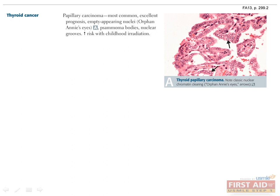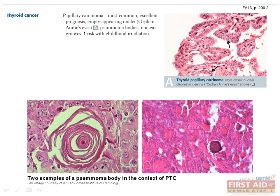The arrows in the image point out orphan Annie eye nuclei, as well as nuclear grooves and intranuclear pseudoinclusions. These are examples of a psammoma body in the context of PTC. Note in the left image that there is a single necrotic tumor cell in the center of the psammoma body that probably acts as the nidus for the formation of the structure.